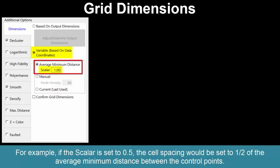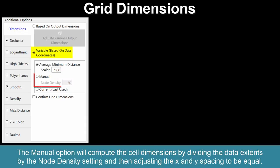For example, if the scalar is set to 0.5, the cell spacing will be set to one-half of the average minimum distance between the control points.